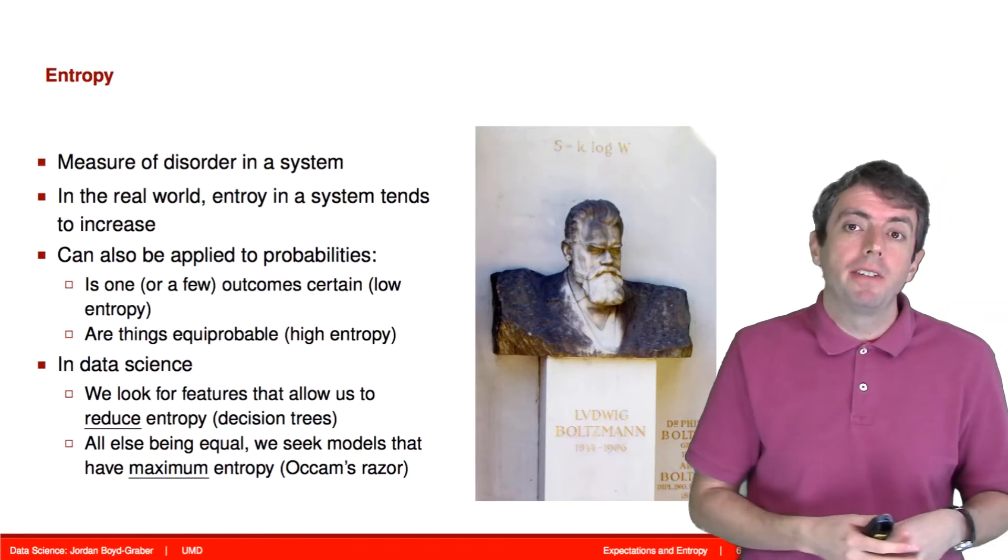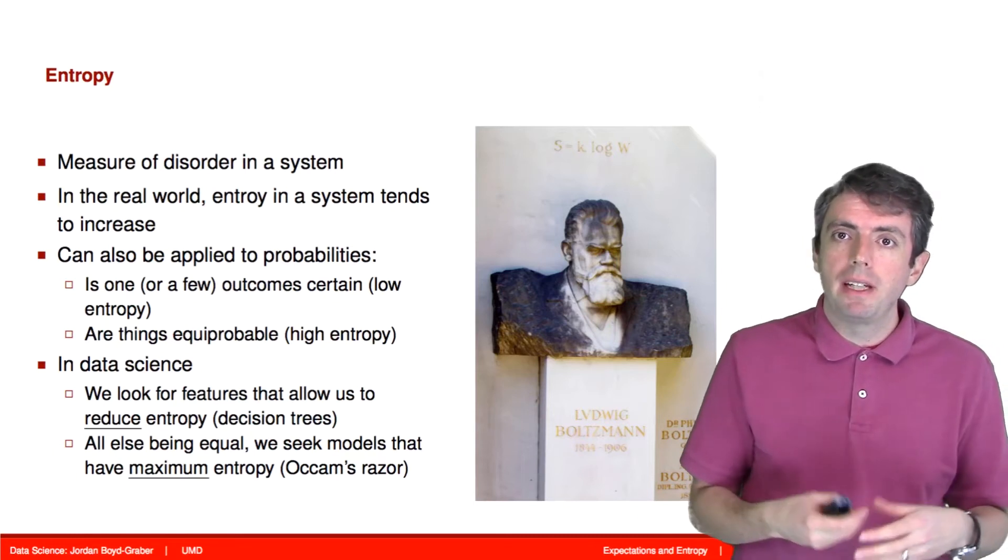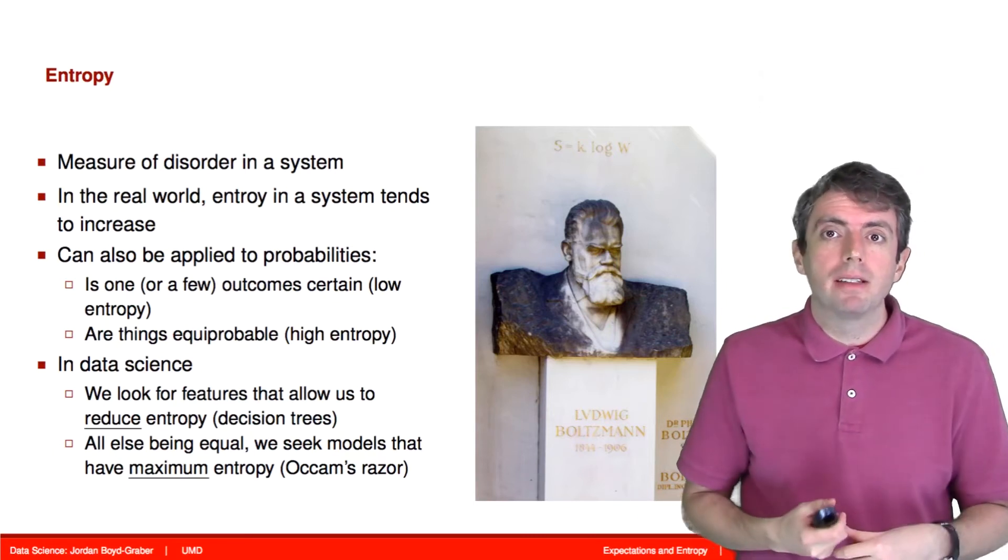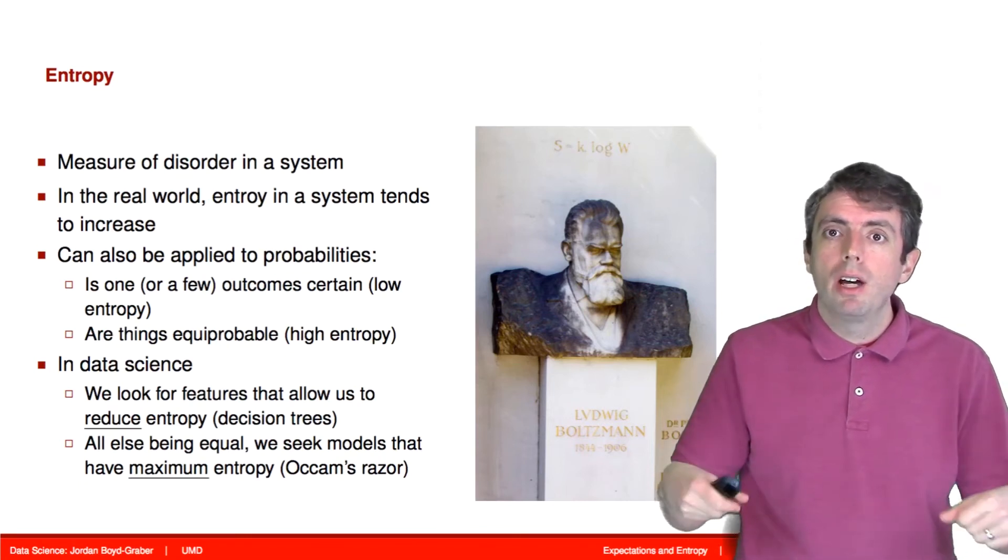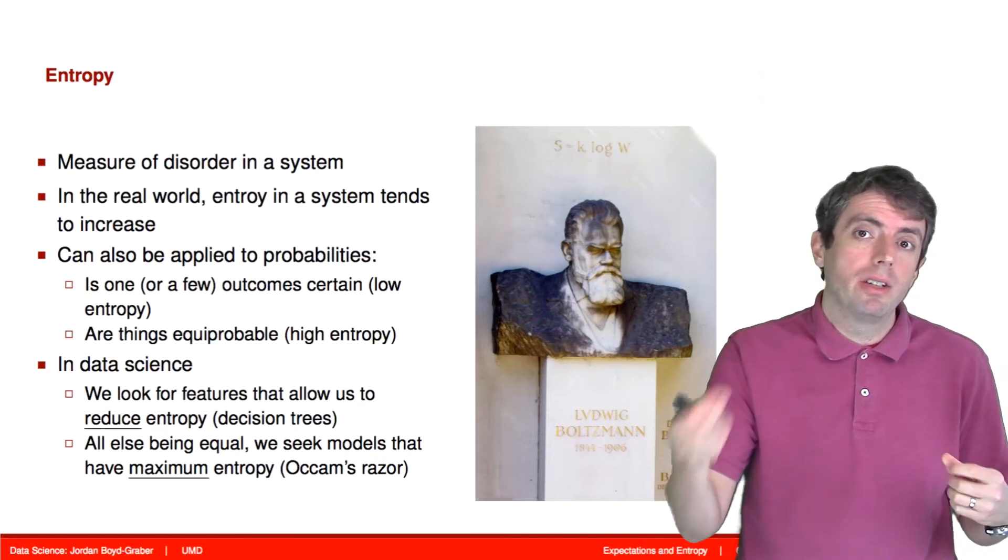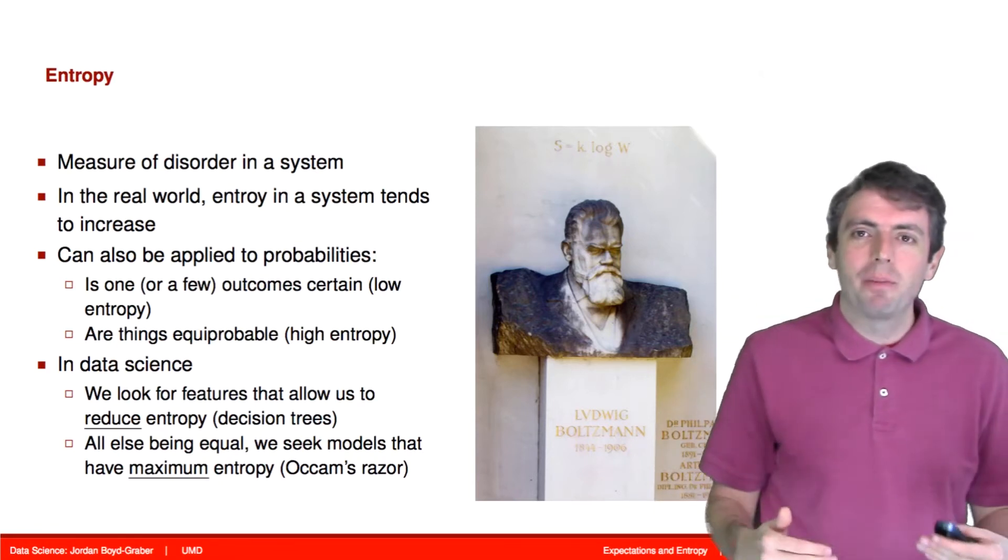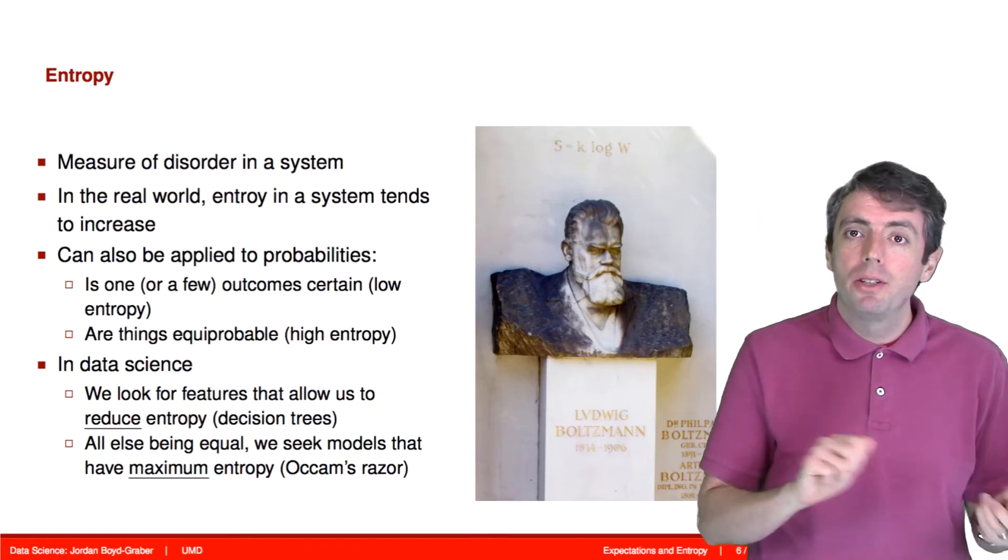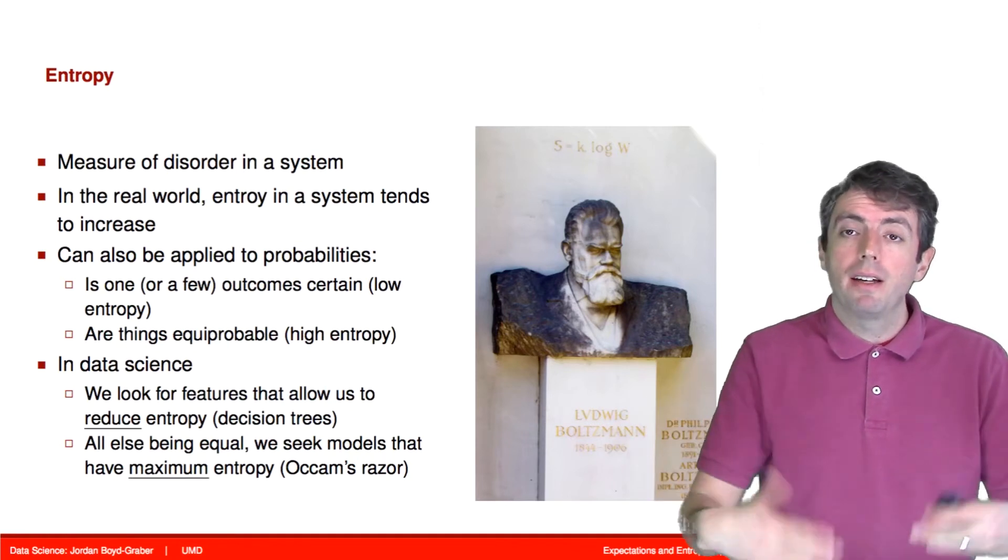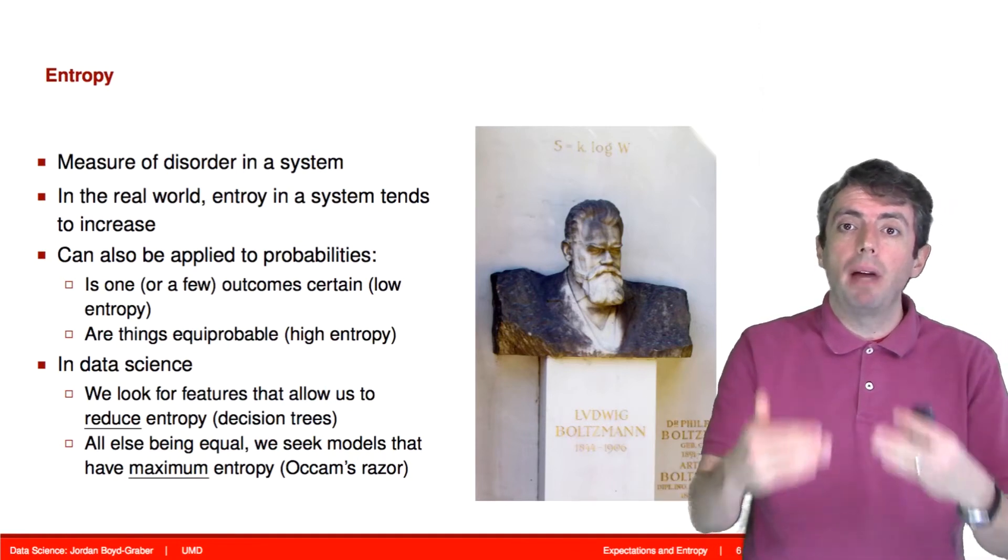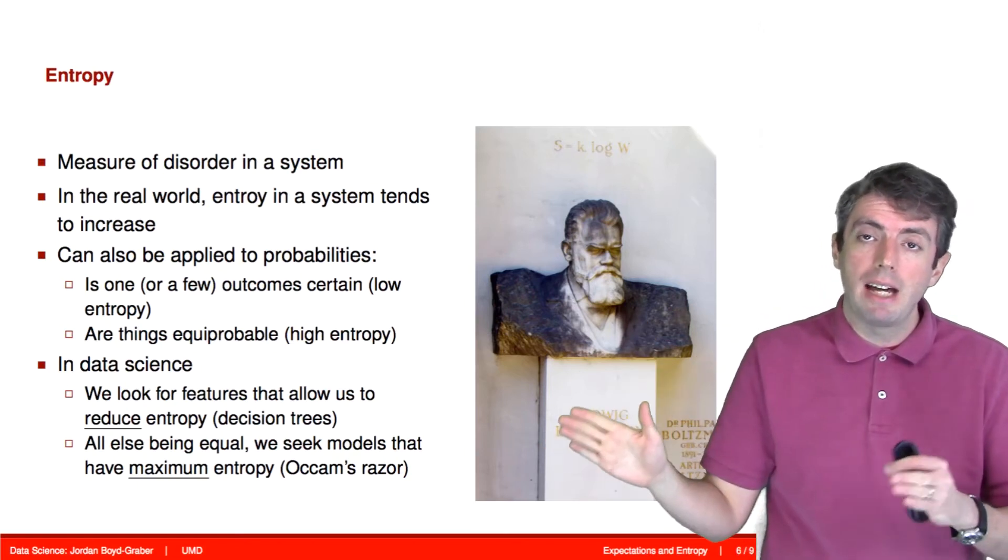Despite the origin of entropy in statistical mechanics or physics, we use entropy in data science. We'll use it when we talk about decision trees, because when we try to make a decision, we want our decision to reduce the uncertainty of the thing that we're trying to predict. We'll also see entropy when we talk about choosing between various hypotheses. Often, when we don't know what's going on, we want to choose a model that has maximum entropy given that it matches constraints that we have on our data.